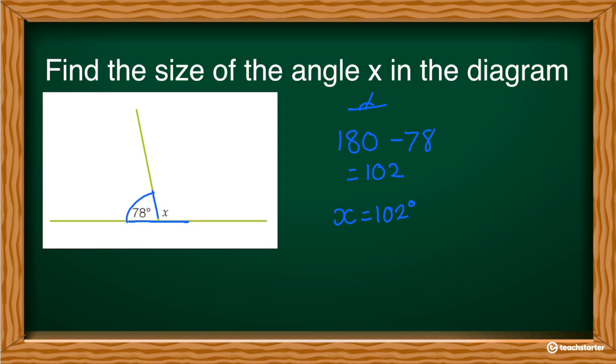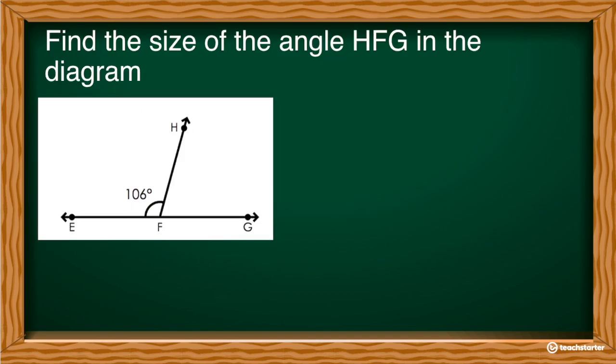Let's try one more. Find the size of H, F, G. So I've got from H to F and then G. So it's this angle here that they want to know. Again, I see that it's on a straight line. So I know it's supplementary angles. I'm going to draw a symbol for my teachers so they know.